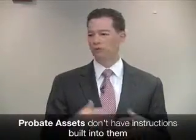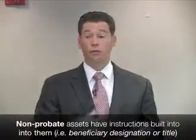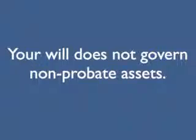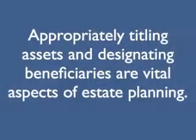Probate assets are basically ones that don't have instructions built into them — like a brokerage account titled solely in your name. The probate courts make sure that asset gets distributed in accordance with your will. Your will only governs those probate assets. So those fancy trust provisions for your child until age 35 built into your will won't apply to a life insurance policy where your son is the designated beneficiary — the beneficiary designation governs. It's very important to go through every asset title and every beneficiary designation and make sure it dovetails the plan.